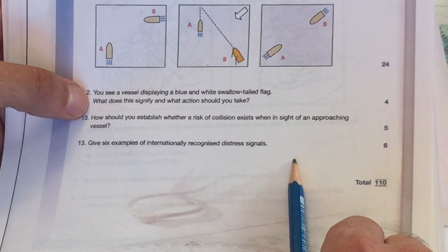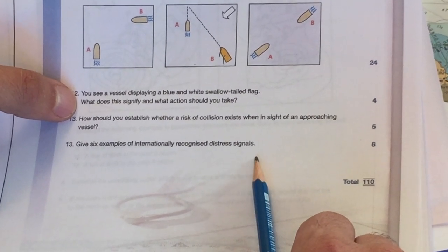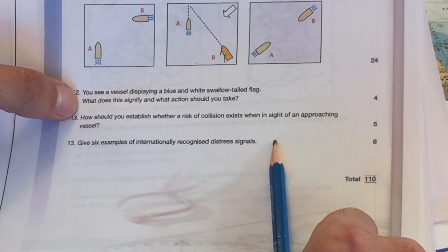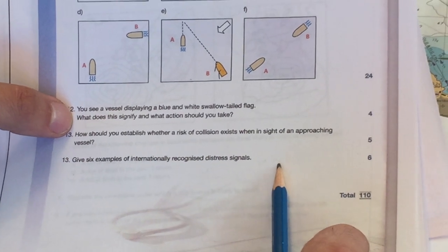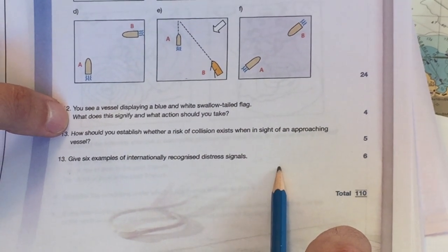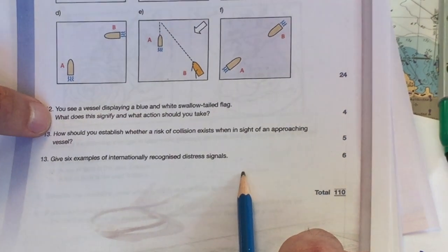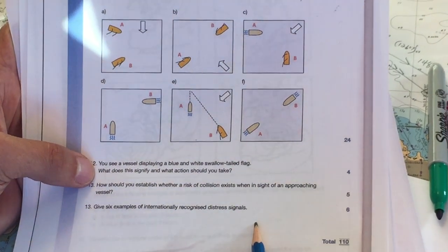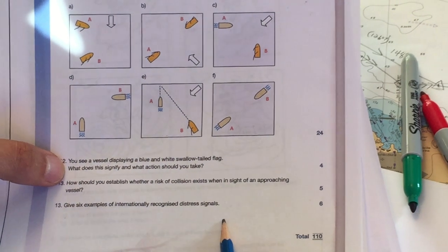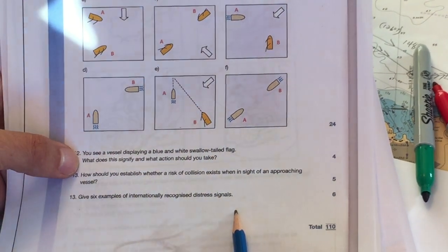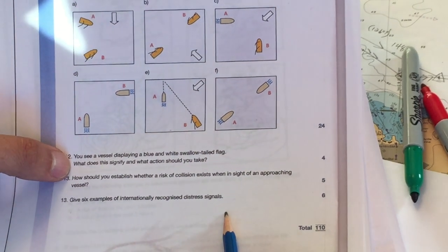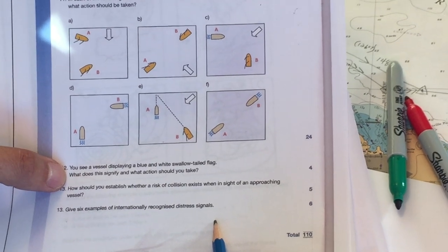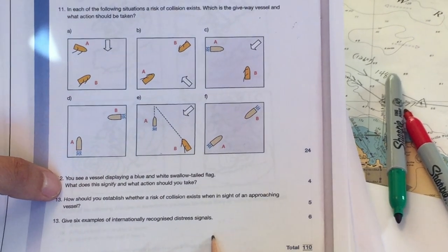Give six examples of internationally recognized distress signals. Okay, a gun fired off in one minute intervals. Of course, SOS, right? That should have been the first thing that came to my mind. SOS, or actually, no, I meant to say Mayday, but SOS Morse code as well, so that's three. Orange smoke, that's four. Parachute rockets or handheld flares that show red, a red flare, that is five. And flames on your vessel, the flames burning in a barrel, say. And also, standing there with your arms outstretched, raising them over your head, up and down over your head, is another way to do that.